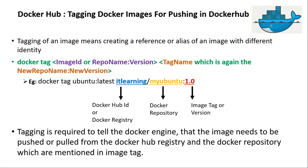Hello friends. In the last session we learned about docker image tagging. We tagged two docker images: one is the official Ubuntu image, and the other is 'my first docker image', which is the custom image we built using the Dockerfile. In this session, let us learn how we can push these tagged docker images to the Docker Hub registry.